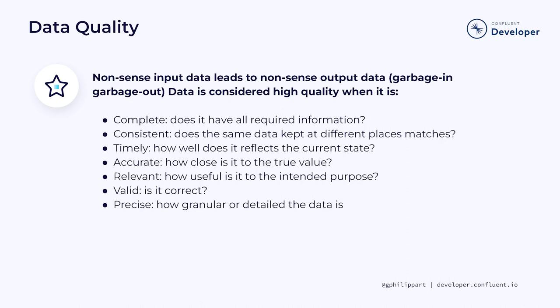Relevance measures how useful the data is for the intended purpose. Let's say you're building a customer analytics report for VIP customers — data pertaining to regular customers would be considered irrelevant and would require further filtering. Validity refers to the correctness of the value. For example, a time period with a start date greater than the end date, or using 13 as the month number, would be good examples of invalid data.